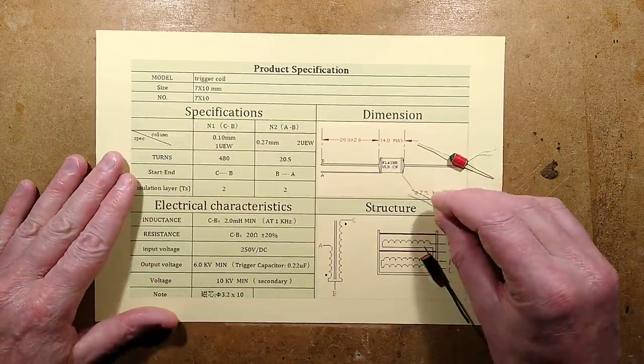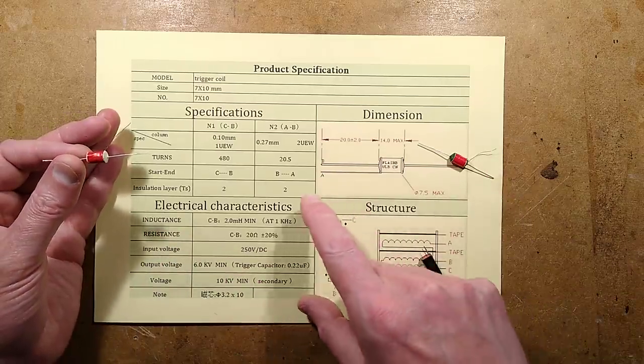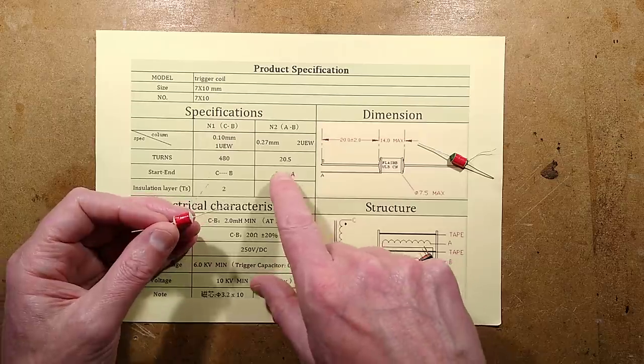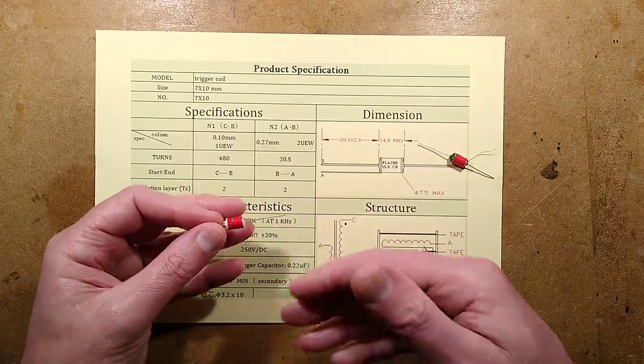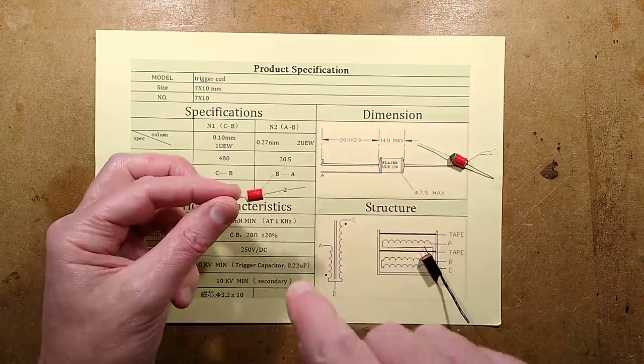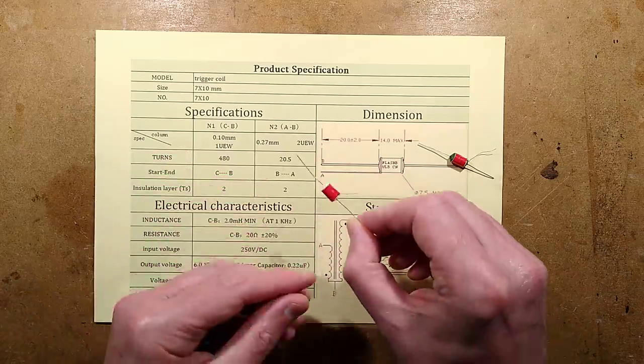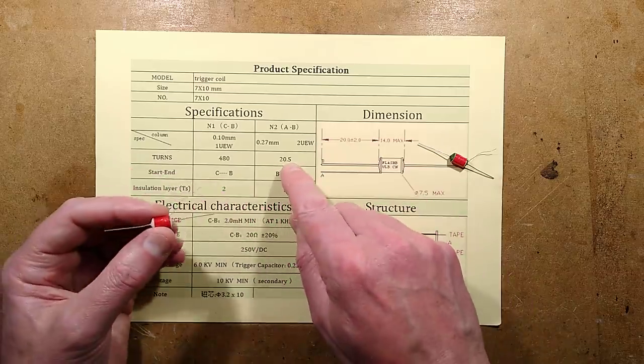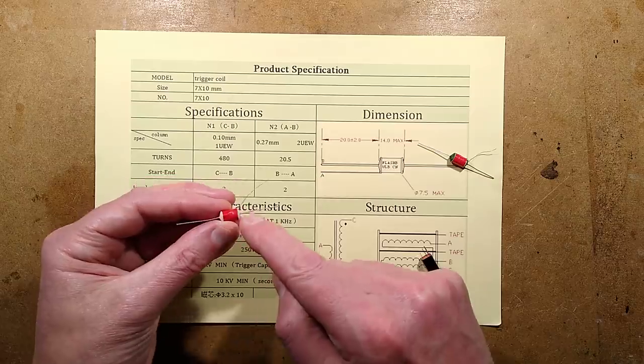The datasheet for it suggests that it has a winding ratio. It's got 20.5 turns on the primary, so this isn't like a transformer that you can just power straight off the mains. You have to actually pulse this by discharging a capacitor through it. The primary only has 20.5 turns, very low resistance, but the secondary has 480 turns.